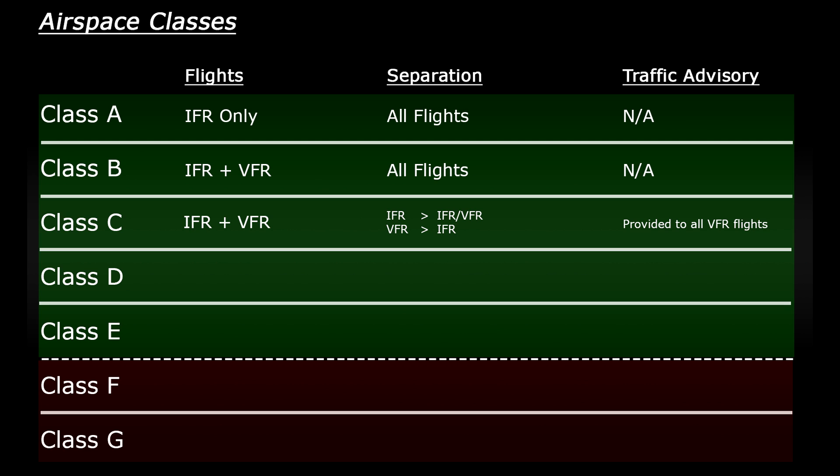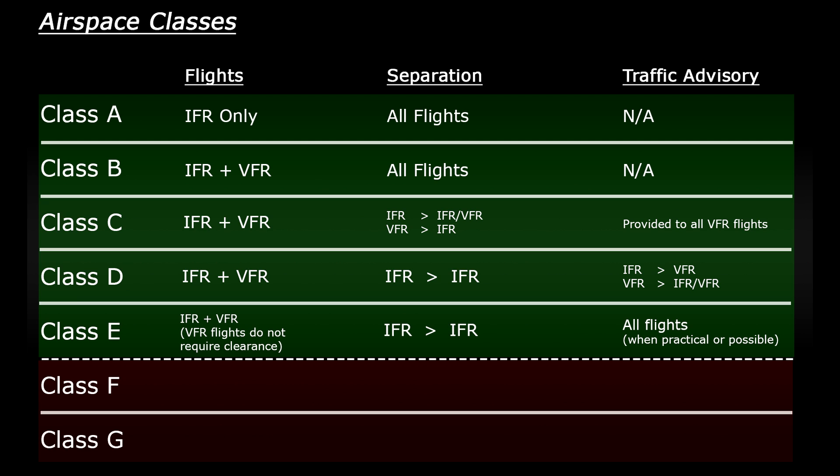The pilots involved in VFR-to-VFR situations need to maintain separation themselves. In class D, IFR and VFR flights are allowed; ATC provide separation for IFR flights only and also provide IFR flights with traffic information about VFR flights. VFR pilots receive traffic information about all other flights. For class E, IFR and VFR flights are allowed, but VFR flights can enter without prior clearance from ATC. IFR flights are only separated from other IFR flights, and traffic information is given to all aircraft only when practical.